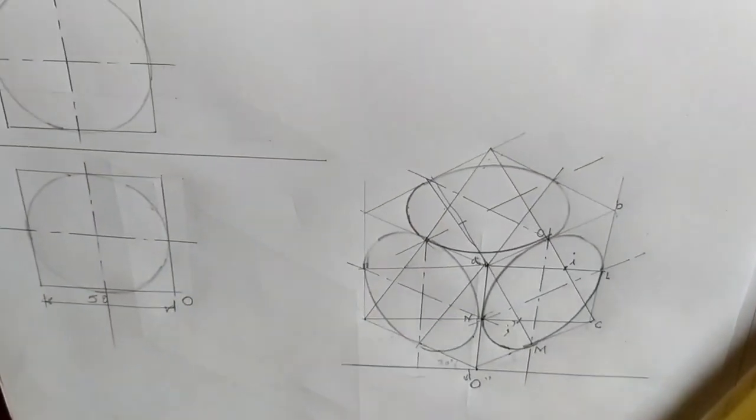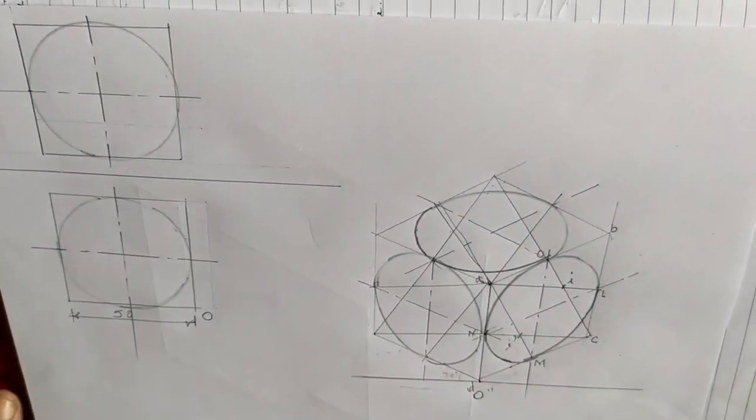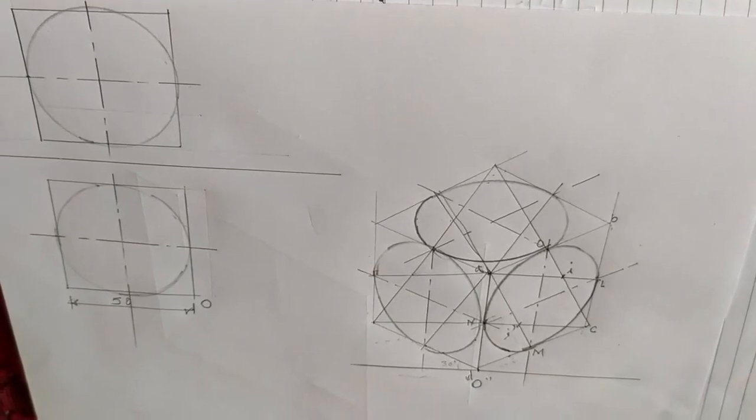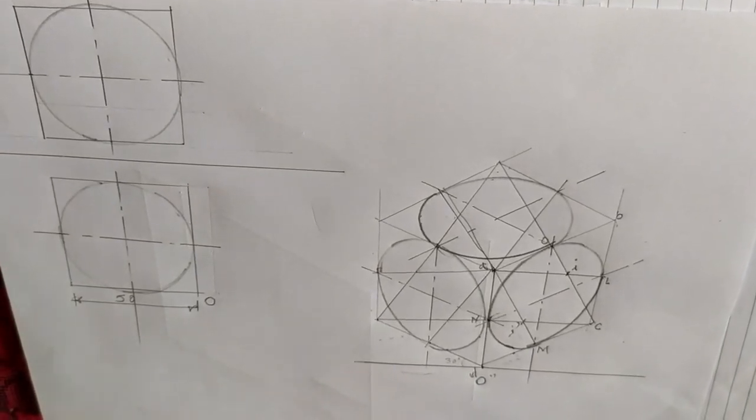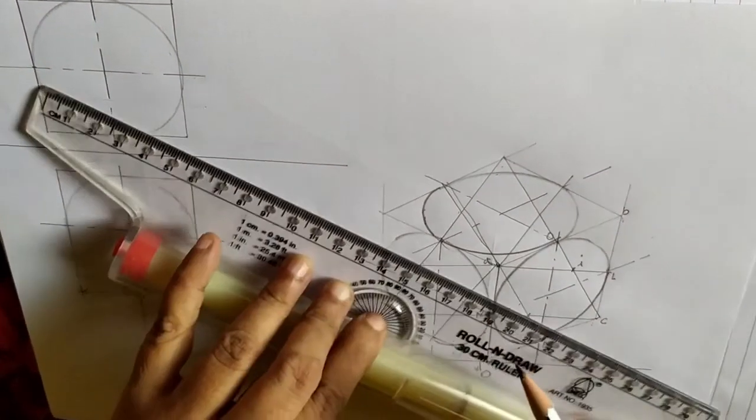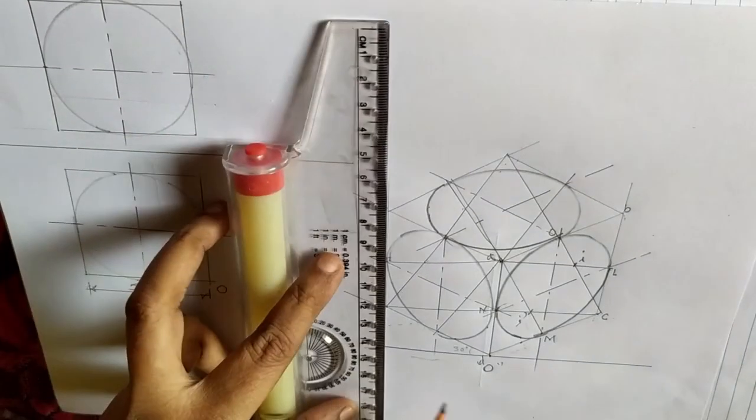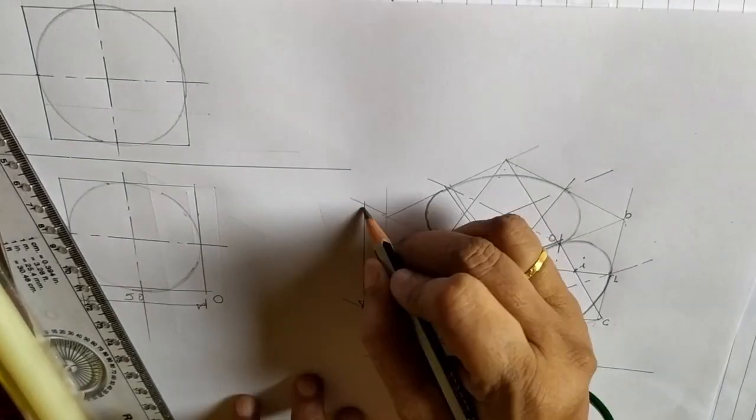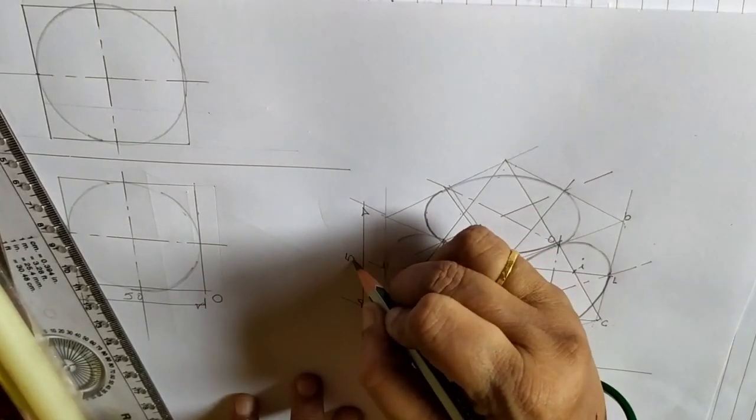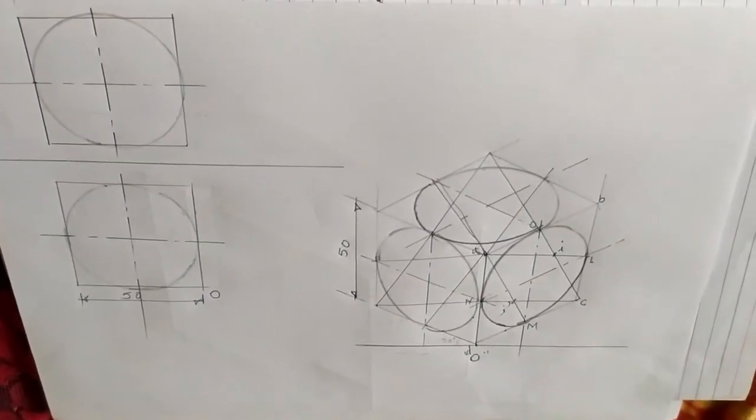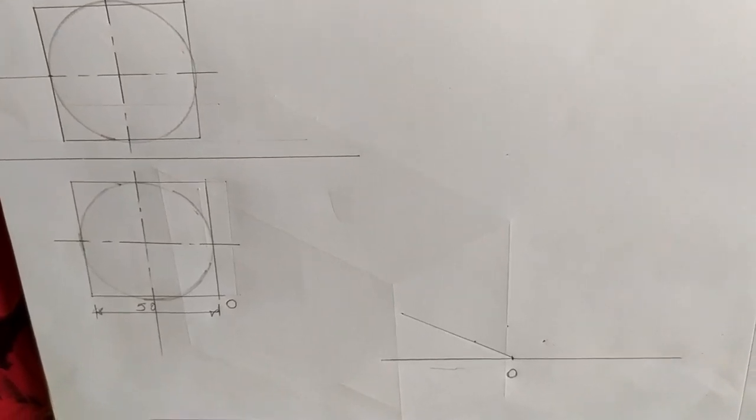This is nothing but the isometric view drawn from the given orthographic views. Here dimension 50mm and across dimension there. Okay, so try to solve this isometric view. We will try to solve the next isometric view.